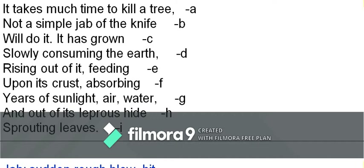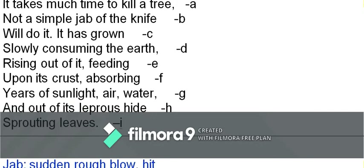Looking at the rhyme scheme: 'tree' gets the letter A, 'knife' gets B, 'grown' gets C, 'art' gets D, 'feeding' gets E — new letters keep coming up for each line ending. None of the sounds are repeated, so this is a blank verse or free verse with no rhyme scheme.